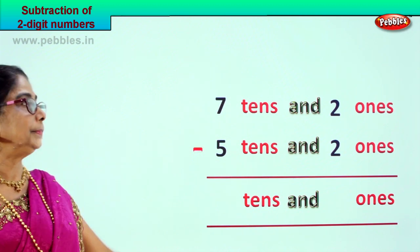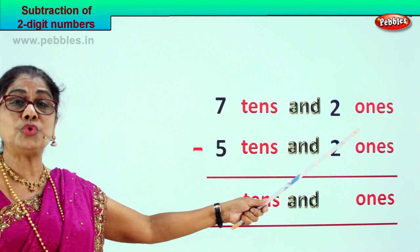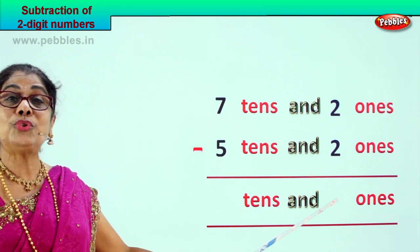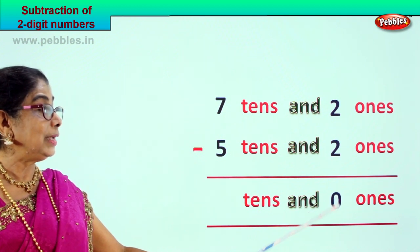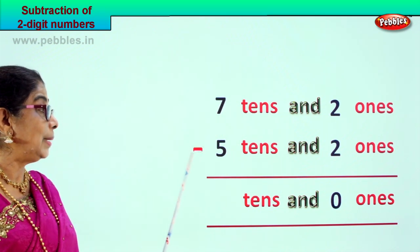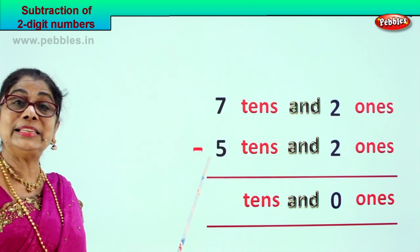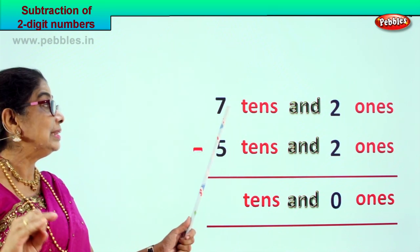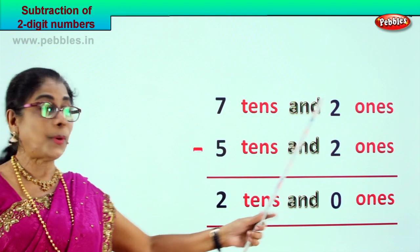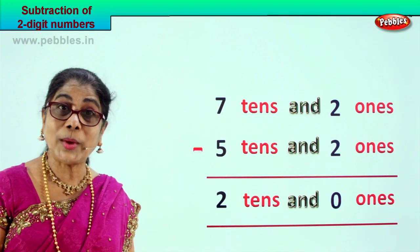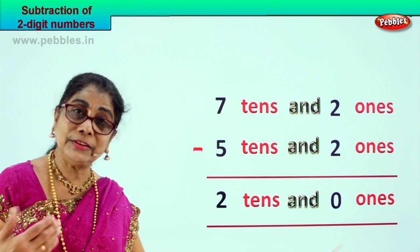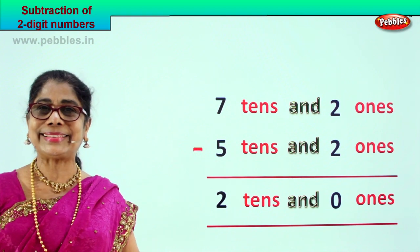Let's do the sum together. Let's go to the ones — 2 ones minus 2 ones, 2 minus 2, 2 take away 2 gives you the answer 0. 2 minus 2 is 0, so you have 0 in the ones place. Tens place: 7 tens minus 5 tens — 7 take away 5 is 2. You get the answer 2. 72 minus 52 gives you the answer 20. 7 tens and 2 ones minus 5 tens and 2 ones gives you 2 tens and 0 ones. Did you enjoy?